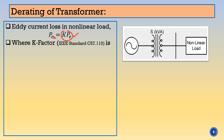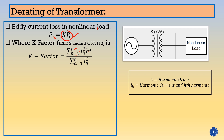According to IEEE standard C57.110, the K factor can be calculated as: K = [Σ(IH² × H²)] / [Σ(IH²)], where the harmonics H varies from 1 to N. Here H stands for harmonic order and IH stands for harmonic current at the H-th harmonic.